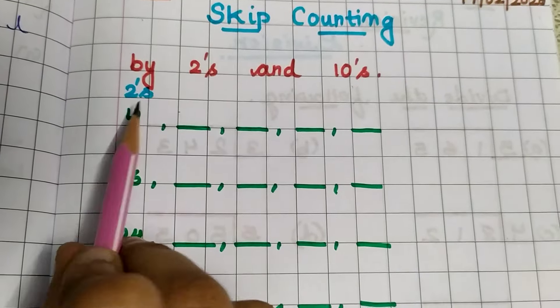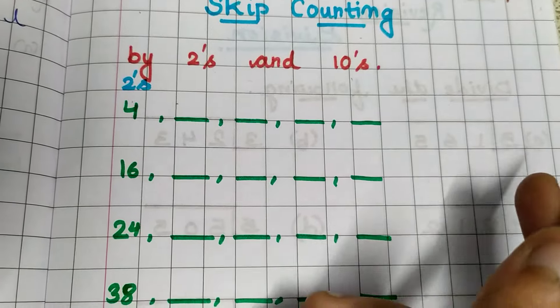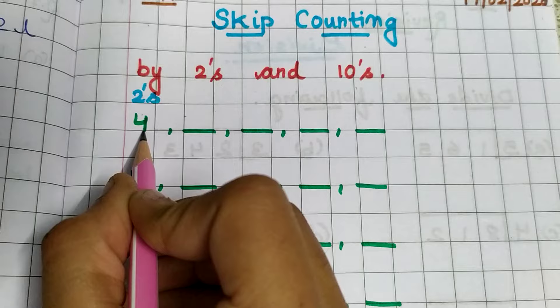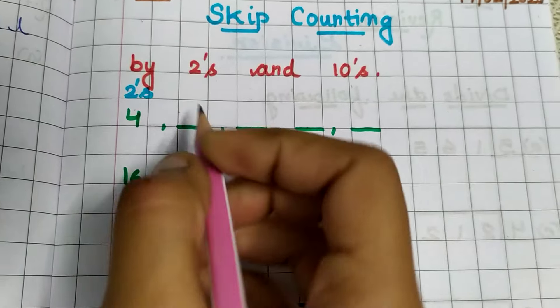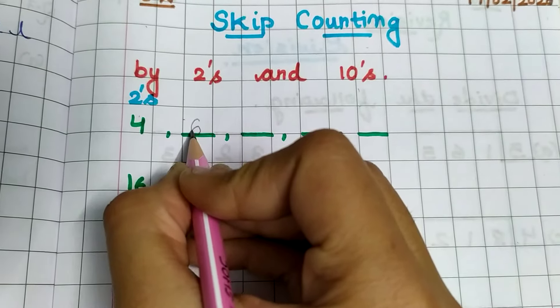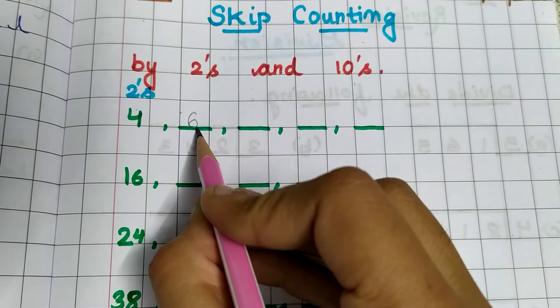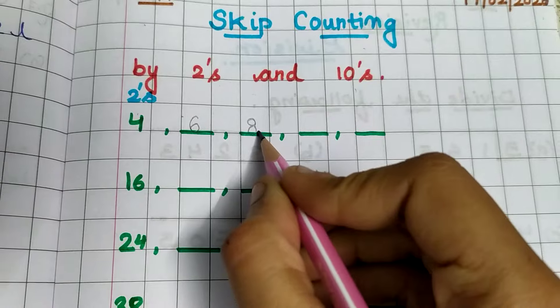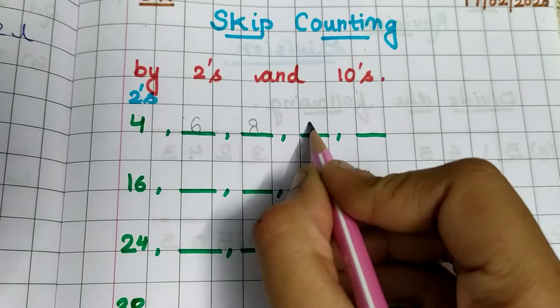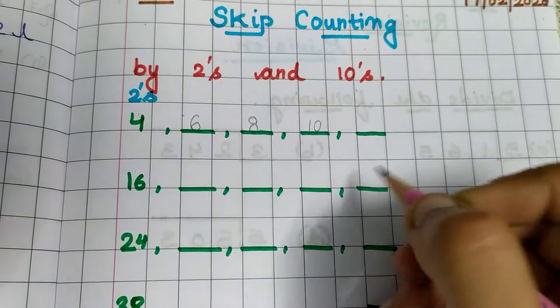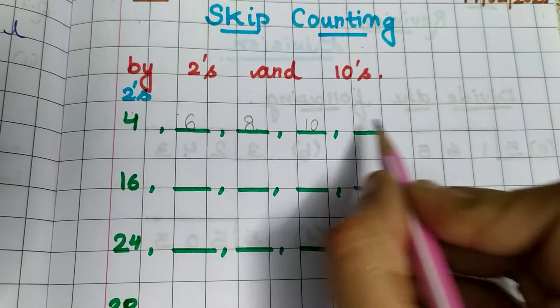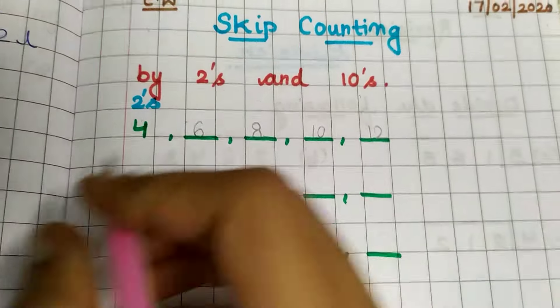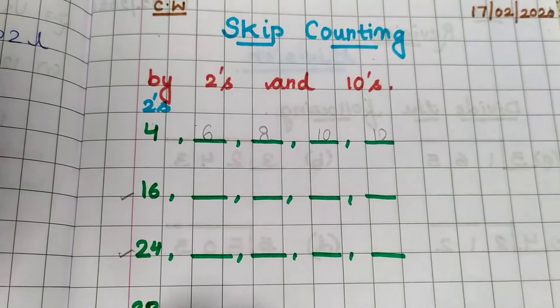For skip counting by 2's, we skip one number and write the next. This is 4. Skip 5 and write 6. Skip 7 and write 8. Skip 9 and write 10. Skip 11 and write 12. Similarly, you have to complete these three parts.